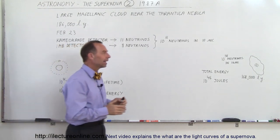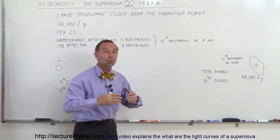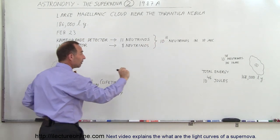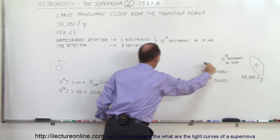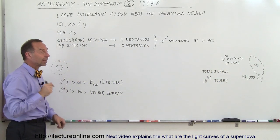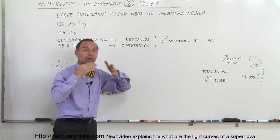Imagine that neutrinos leave a place 168,000 light-years away, they go into all directions of the Universe, and then a very small percentage of that actually will reach those detectors on the Earth 168,000 light-years away, and that many neutrinos would have then gone through those detectors.